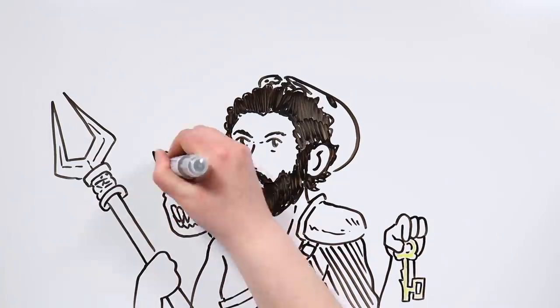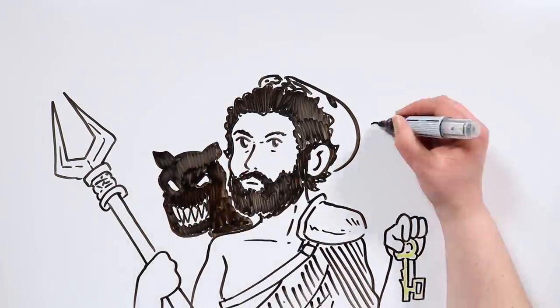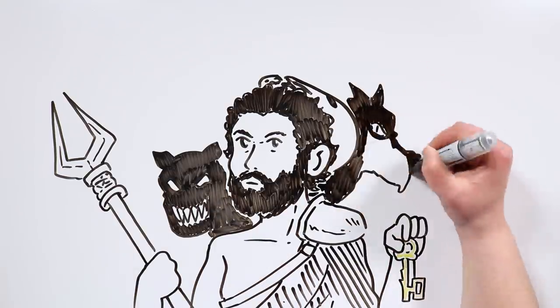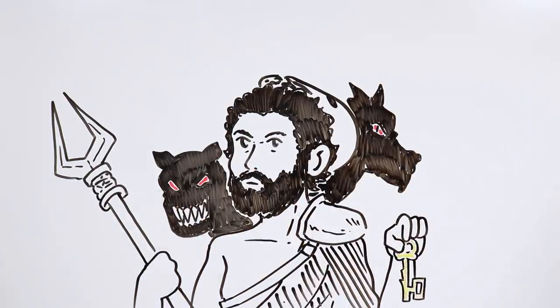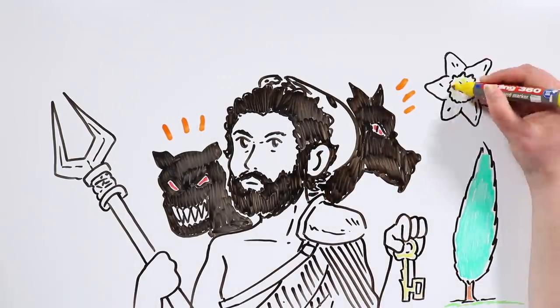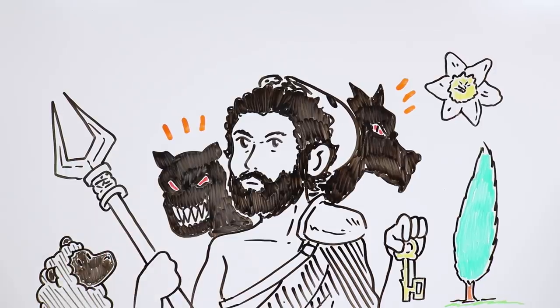The three-headed dog Cerberus is Hades' loyal companion and guardian, and he also has a carriage pulled by dark steeds, dragons or other monstrous beings. The cypress tree, the daffodil plant and the black sheep are consecrated to him.